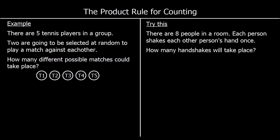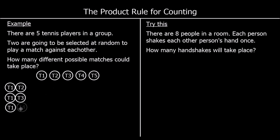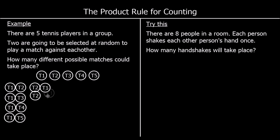Here we've got a slightly different question. There are five tennis players in the group; two are going to be selected at random to play a match against each other. How many different possible matches could take place? We could have player one against player two, player three, player four, or player five. We could pick player two first, then one, then three, four, or five.